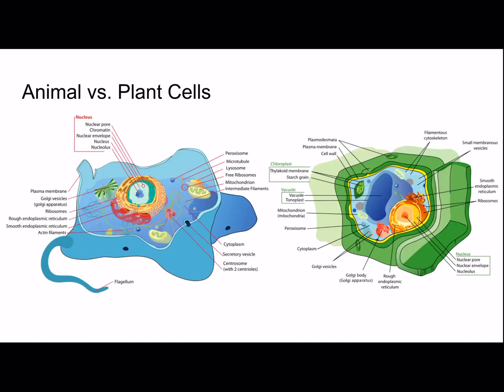Animal versus plant cells — these two are pretty similar in many ways but also have several important differences. Both plant and animal cells are eukaryotes, so they're going to have a lot of the same things, such as a nucleus, a cytoplasm with mitochondria, endoplasmic reticulum, and all of that. A few differences include: plant cells have a cell wall in addition to a plasma membrane, which gives it more structure, while an animal cell only has a plasma membrane.